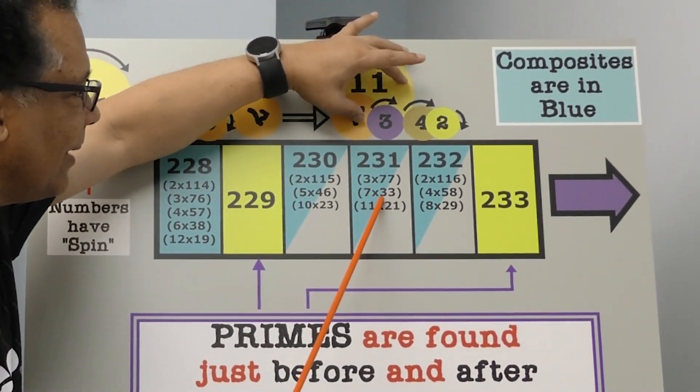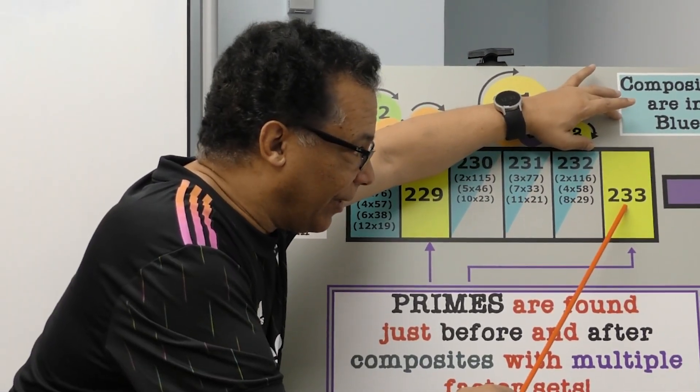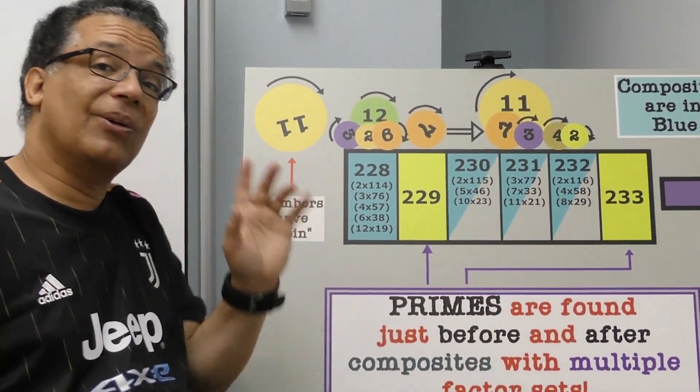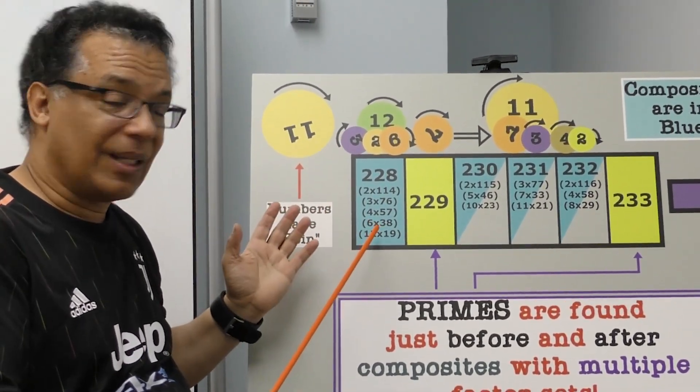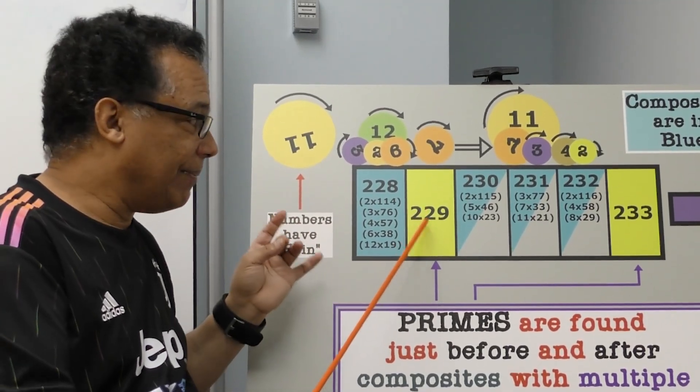Same thing here. Number with a lot of factor sets, a lot of factor sets, more factor sets here, and we notice a prime. So they're in between numbers with a lot of factor sets. So that gives us a clue. Let's look for numbers with a large factor set, because right next to it, we're very likely to find a prime number.